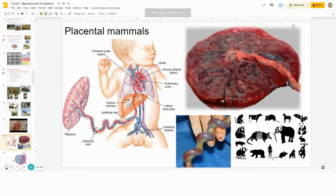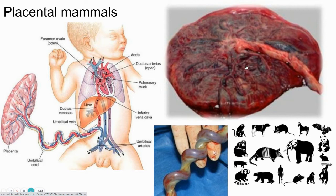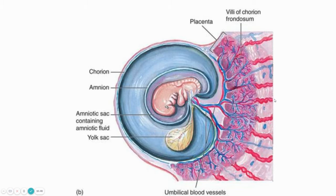Placental mammals like humans have the placenta, which is filled with blood vessels. You can see the umbilical cord carrying blood back and forth to this organ so that transfer can happen. The umbilical cord has two arteries and a vein. This is the initial stage — fertilization happens in the oviduct.